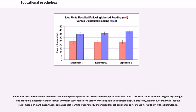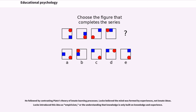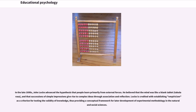John Locke was considered one of the most influential philosophers in post-Renaissance Europe in about the mid-1600s and was called the father of English psychology. One of his most important works, written in 1690, was named An Essay Concerning Human Understanding, in which he introduced the term tabula rasa, meaning blank slate. Locke explained that learning was primarily understood through experience only and that we were all born without knowledge, contrasting Plato's theory of innate learning. Locke believed the mind was formed by experiences, not innate ideas, and introduced this as empiricism.